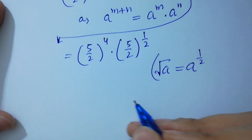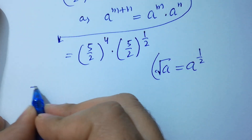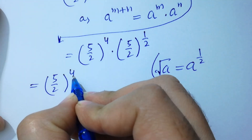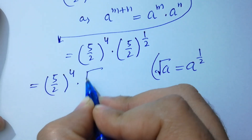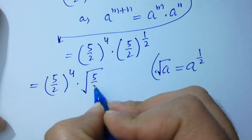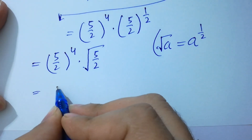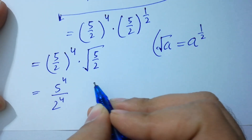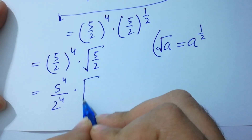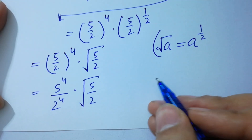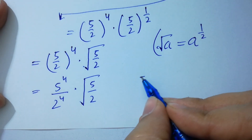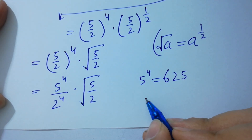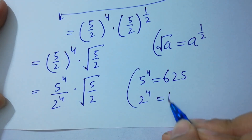So it will be (5/2)^4 times the square root of (5/2). Now, 5^4 equals 625 and 2^4 equals 16, so (5/2)^4 = 625/16.